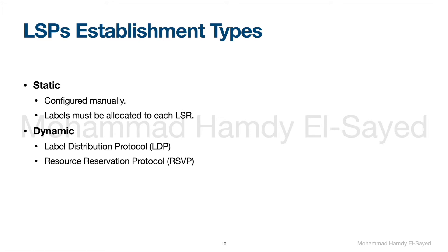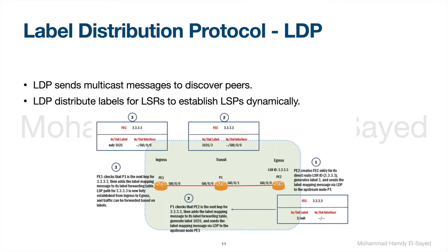So we have the other way, which is dynamic. Two types of protocols are defined: Label Distribution Protocol, LDP, or Resource Reservation Protocol, RSVP. LDP is configured on the router on specific interfaces on which the MPLS network is defined. Then the router sends multicast messages to discover LDP peers. Then LDP assigns a label to each LSR it discovers on the network and distributes the labels to establish LSPs dynamically.